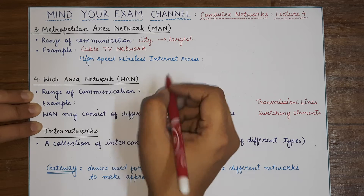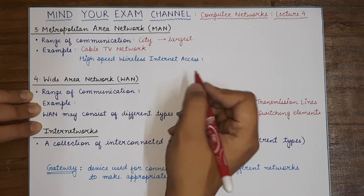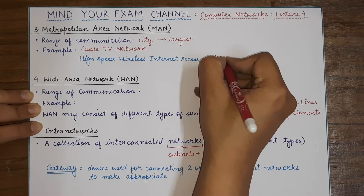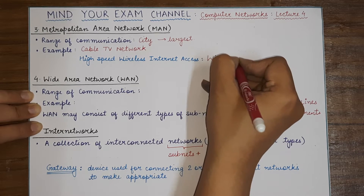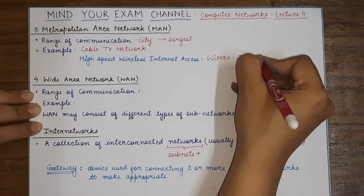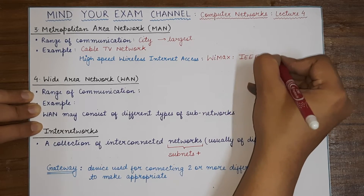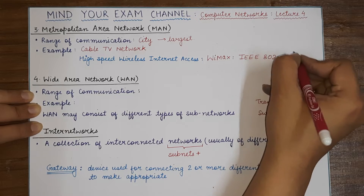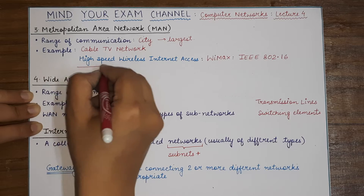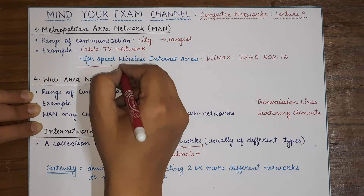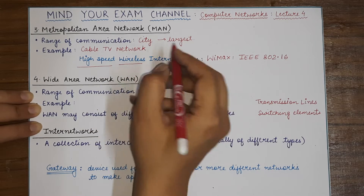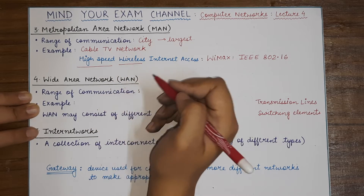Another example of a Metropolitan Area Network is the high-speed wireless internet in the form of WiMAX, which has been given the standard name IEEE 802.16. This is a MAN — a Metropolitan Area Network — which provides high-speed internet access, is wireless in nature, and can span as large an area as a city.